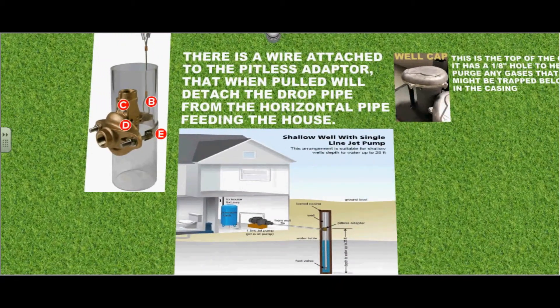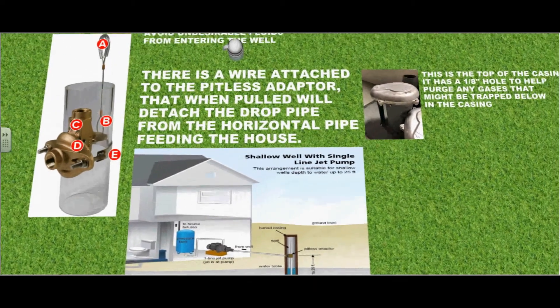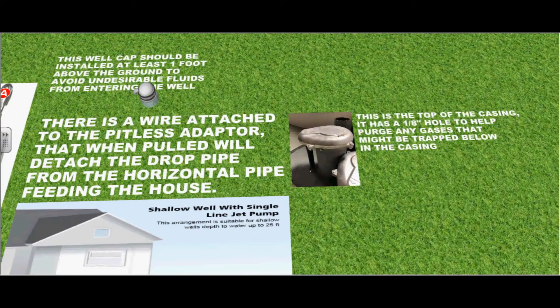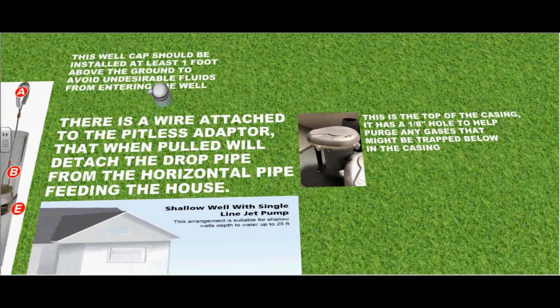This is the top of the casing and has a 1 eighth inch hole to help purge any gases that might be trapped below in the well casing.